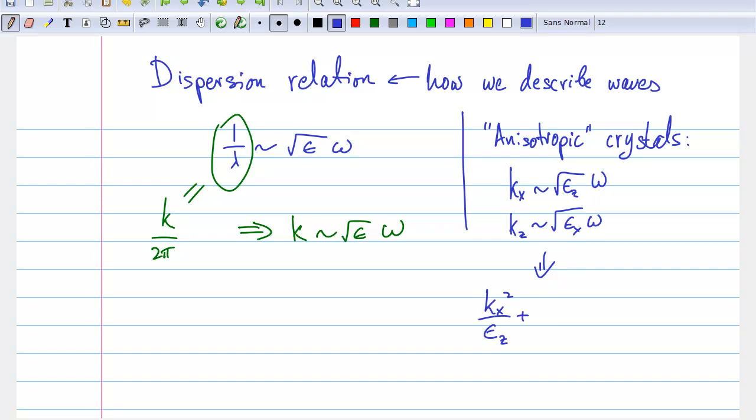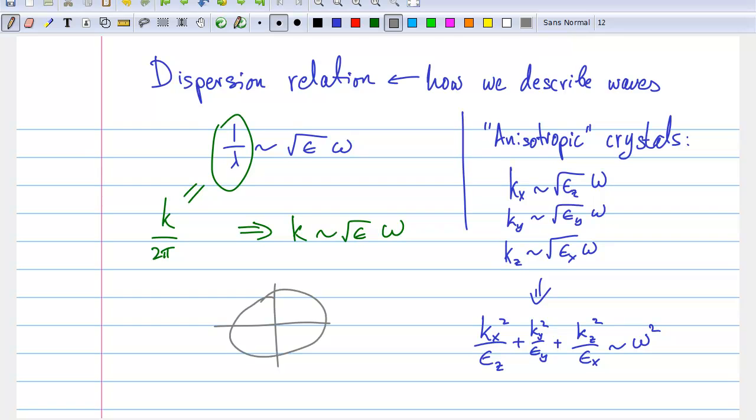When we combine these dispersion relations into a single equation, we find that for a given frequency and a given set of material parameters, this equation describes a three-dimensional surface. This surface represents the set of allowed propagation directions and their associated wavelengths. In the case of most materials, this surface is a sphere, or an ellipsoid.